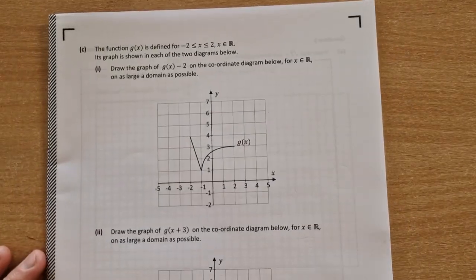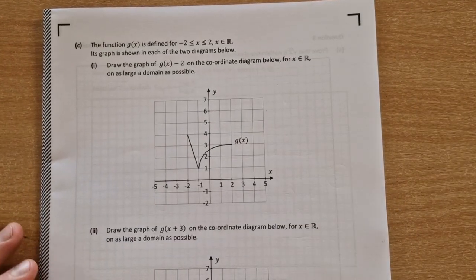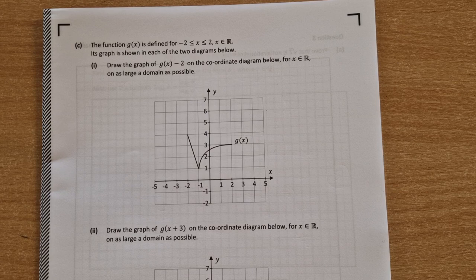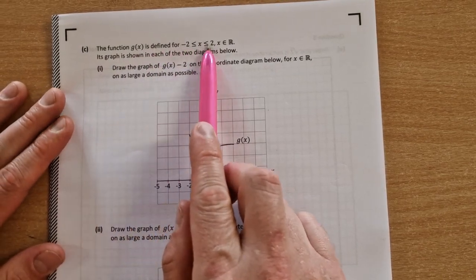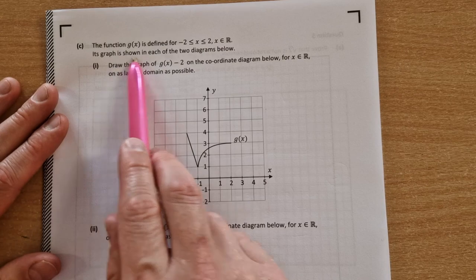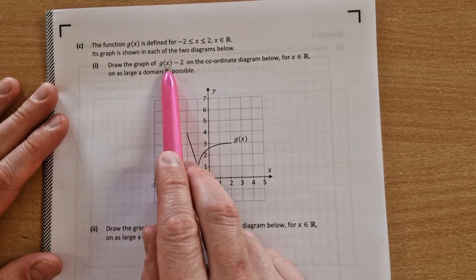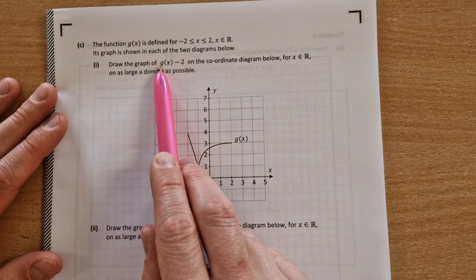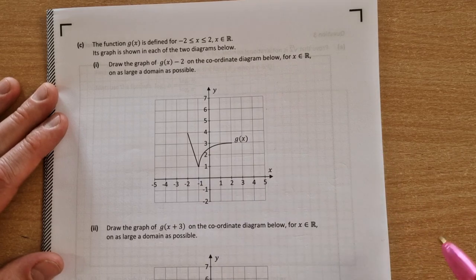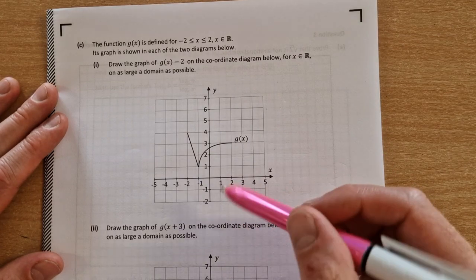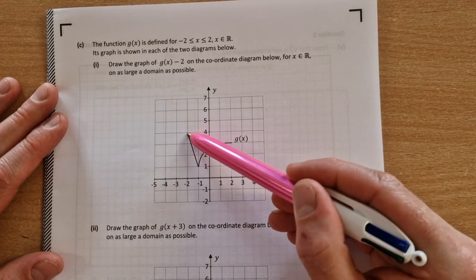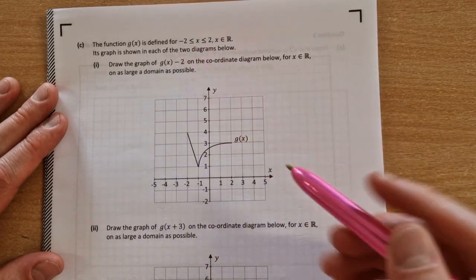The last bit then, we're given a function, we're given the graph of a function, and we're told that it's defined for minus 2 to 2. Its graph is shown. Draw the graph of g of x minus 2 on the coordinate diagram below. So all we do here is every point is moved down by 2 units.